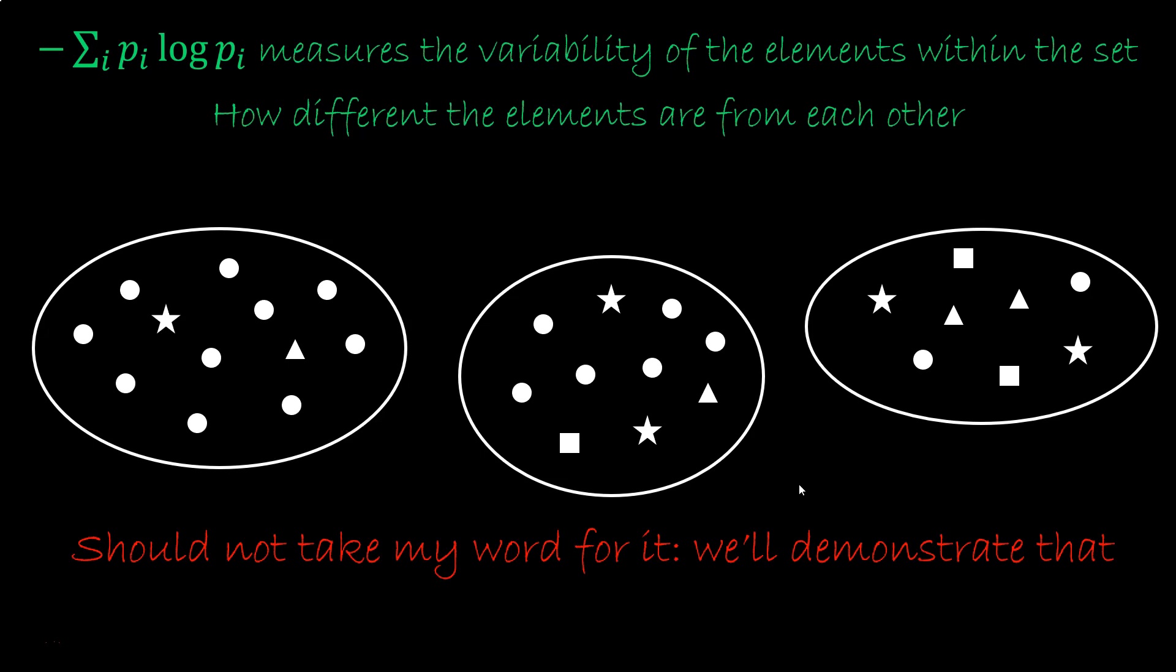But you should not take my word for it. Many people are confused about entropy, maybe I'm confused too. So I'll make a detailed argument, derive the expression, and that argument has to convince you. But before we can be precise on the meaning of the Shannon entropy, we have to be precise on the meaning of the PIs. And that's another source of confusion, because we can have different kinds of distributions.